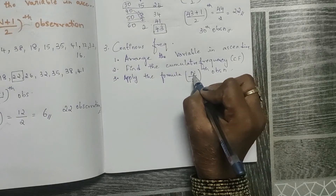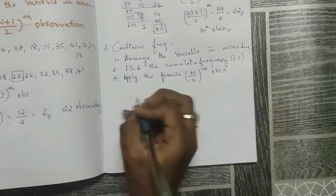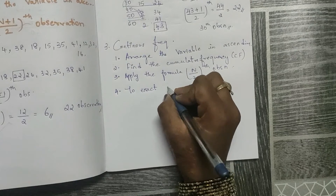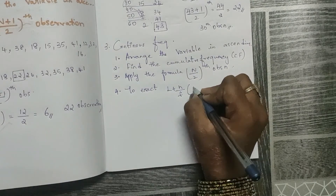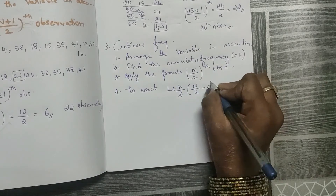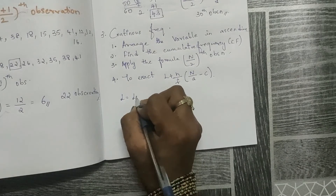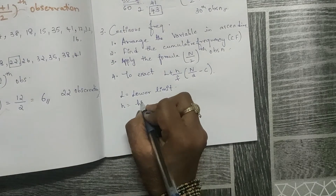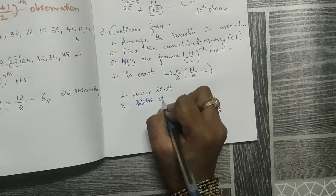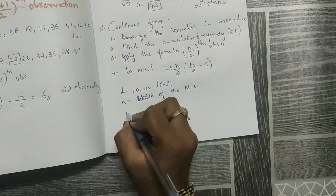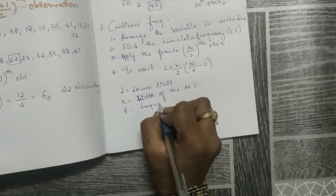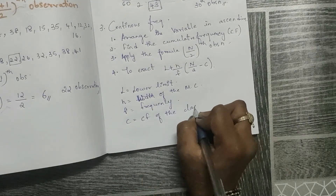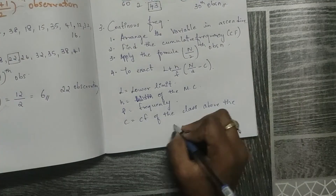Fourth, to get the exact value, apply the formula: l + (h/f) × (n/2 − c). Here, l is the lower limit of the median class, h is the width of the median class, f is the frequency of the median class, and c is the cumulative frequency of the class above the median class.